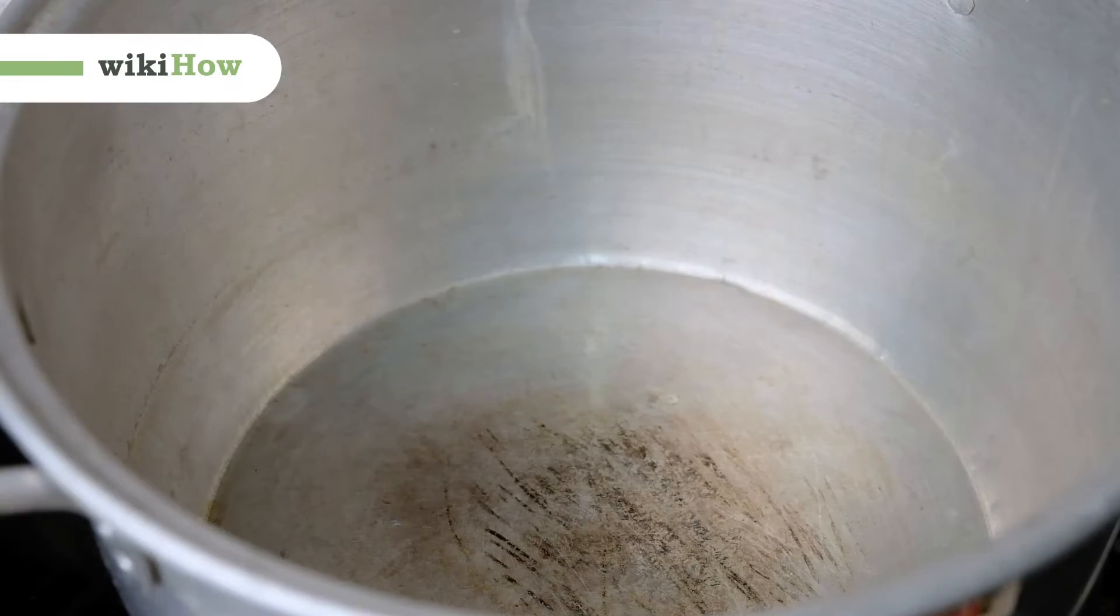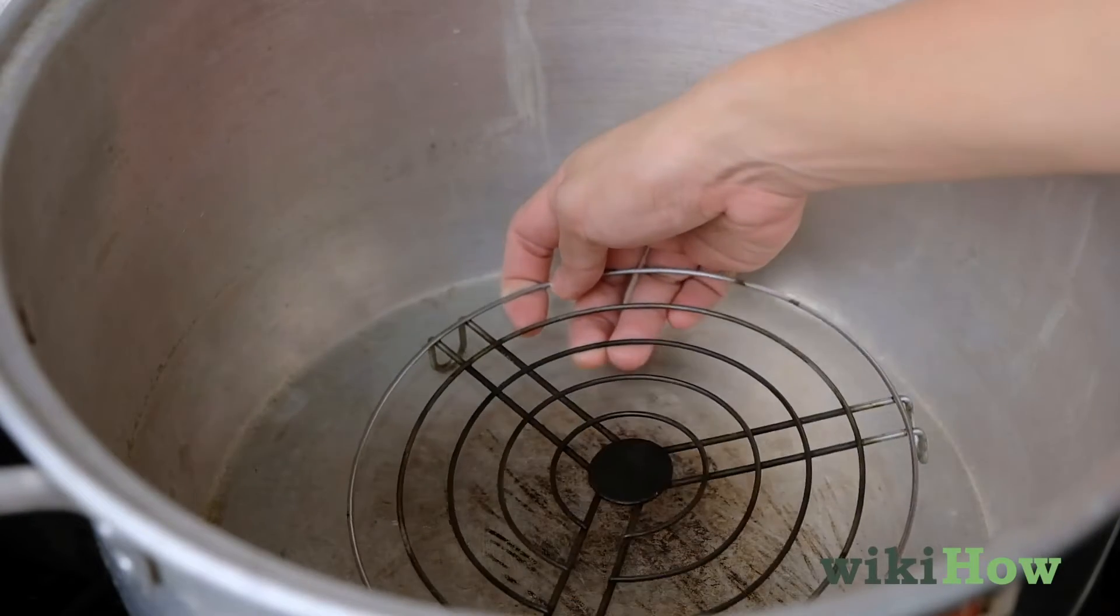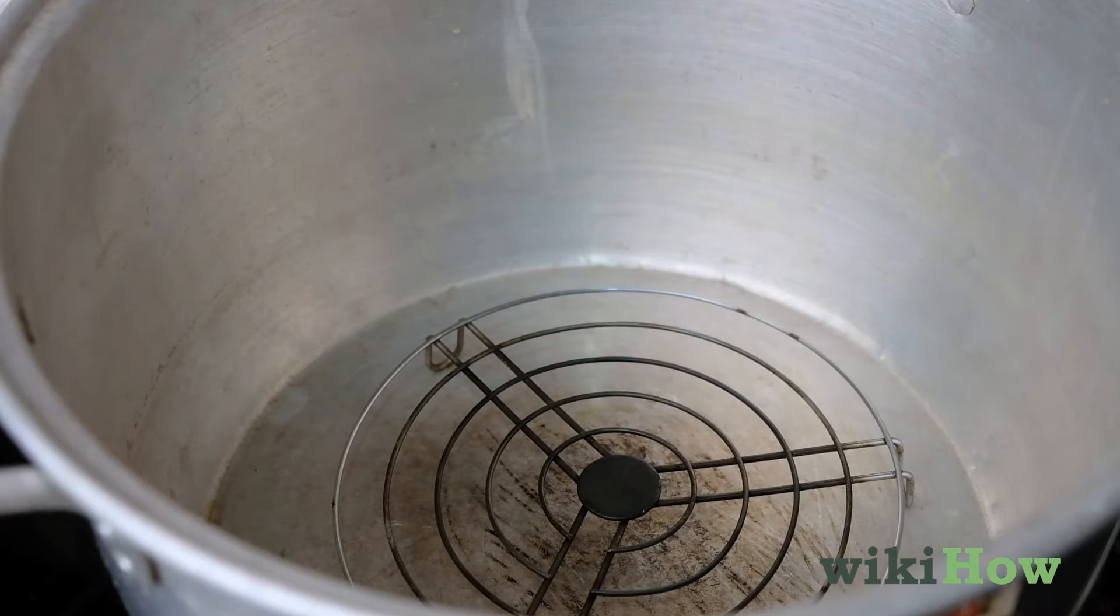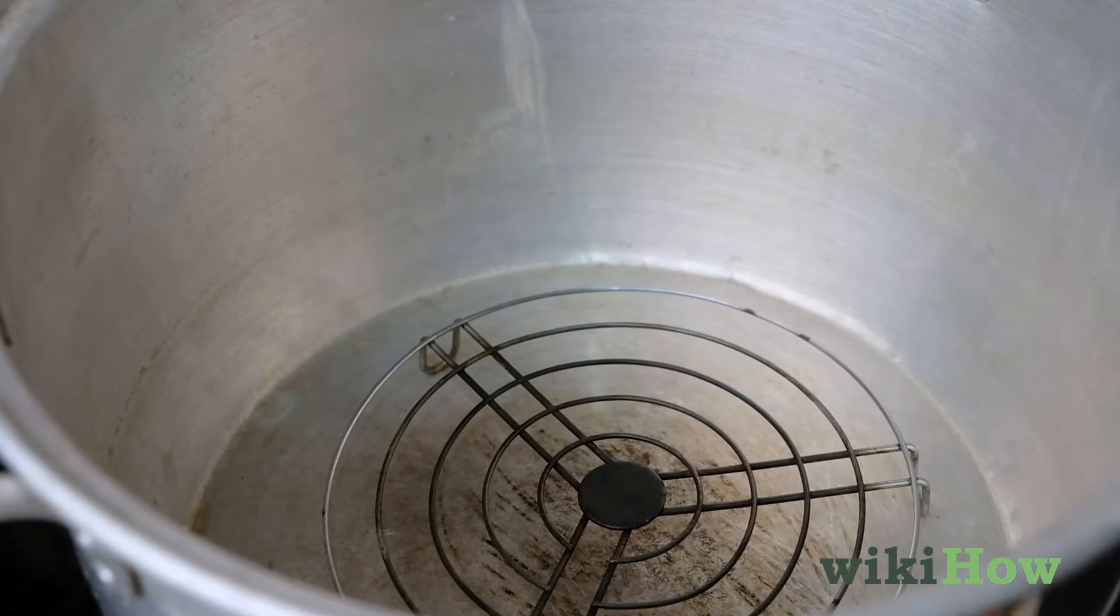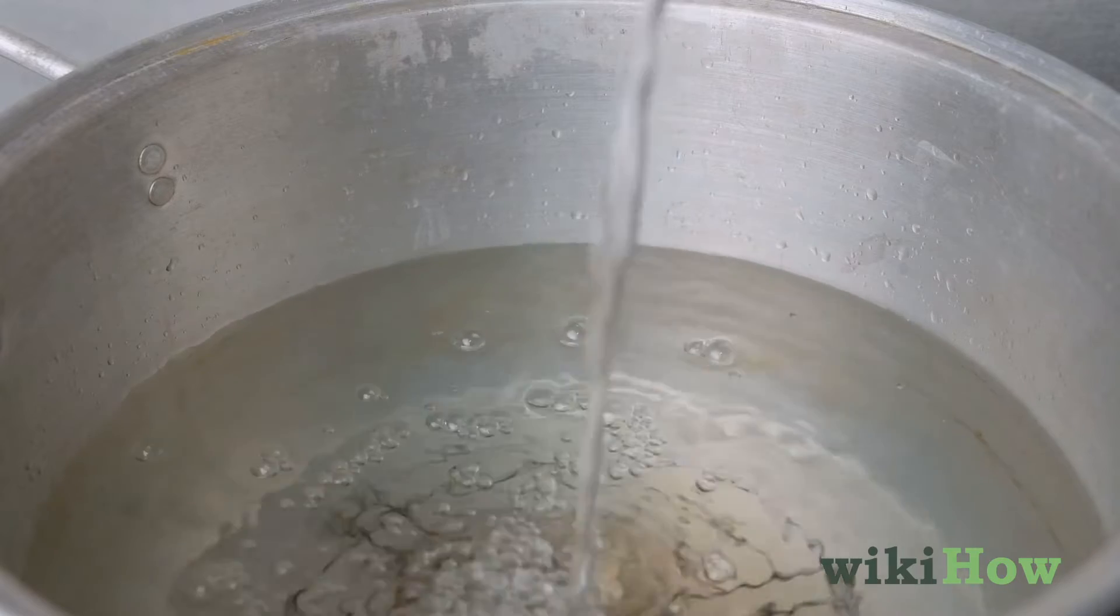To make distilled water, first place a round baking rack in the bottom of a 5-gallon, 19-liter, stainless steel pot and fill the pot halfway with tap water.